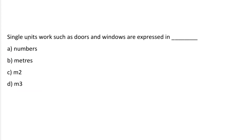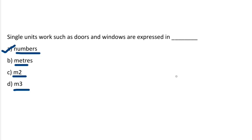Next question: single unit works such as doors and windows are expressed in — Option A: Numbers. Option B: Meters. Option C: Meter square. Option D: Meter cube. The correct answer is option A, Numbers. We will see more in the next video. Thank you.